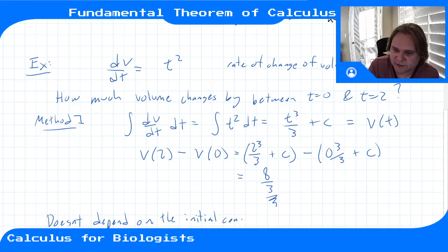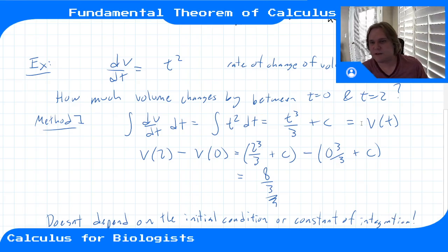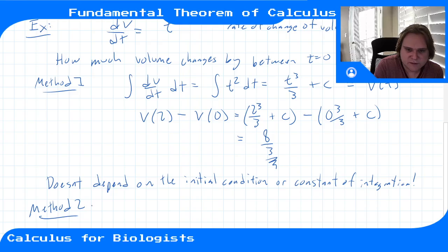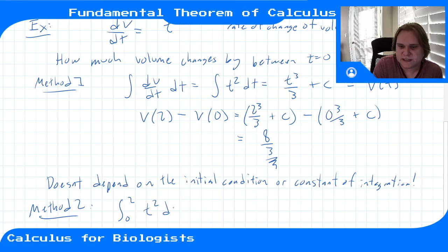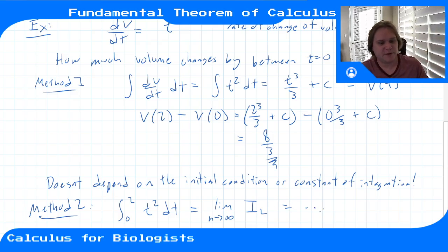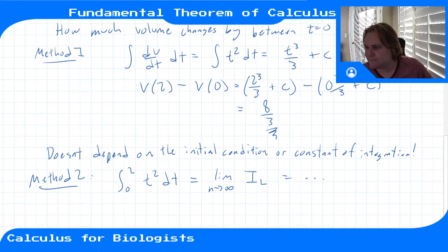Note that asking about total change between two points doesn't depend on the initial condition or the constant of integration, because when we subtract them those constants cancel. Method 2 would be to compute the definite integral from 0 to 2 of t² dt by taking the limit of the corresponding Riemann sum.